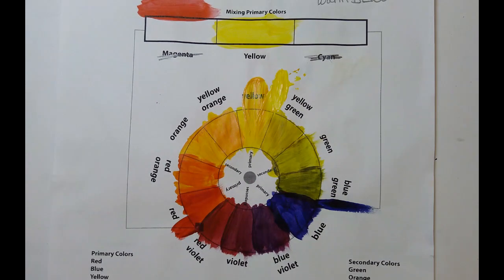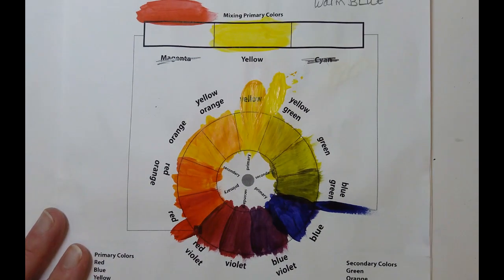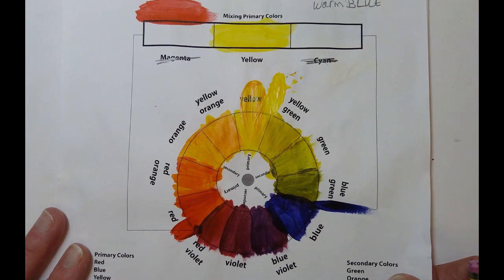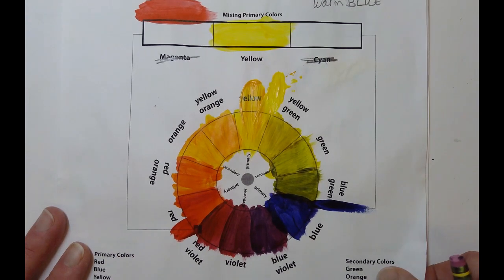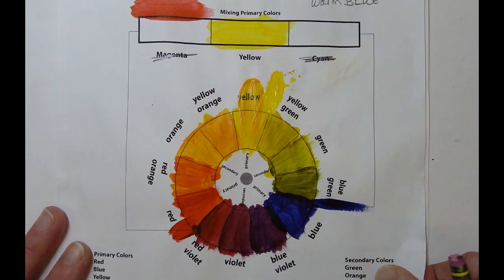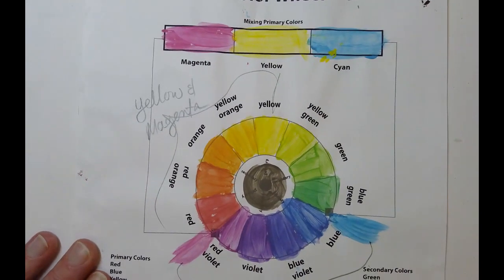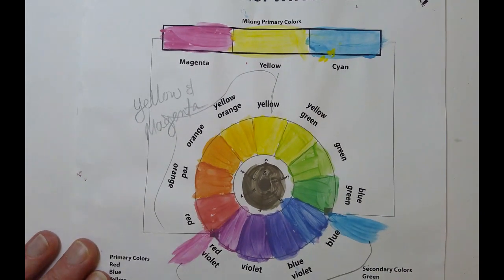So then looking at what we did for our color wheels in studio art, we used that washable Crayola tempera paint. So it's kind of temporary, it's washable. But those colors came out really light, and your color wheels are going to look more like this in studio art this year.